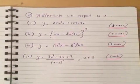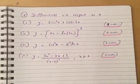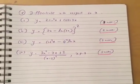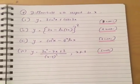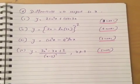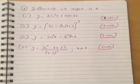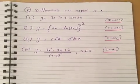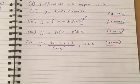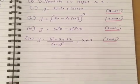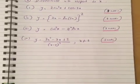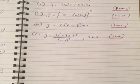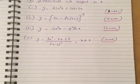Question 8: Differentiate with respect to x. Part 1: y equals 2 sin cubed x plus cosec 3x. Part 2: y equals 2x minus ln 3x all squared. Part 3: y equals cot squared x minus e to the x ln x. Part 4: y equals 3x squared minus 7x plus 2 over x minus 3 squared where x is not equal to 3.